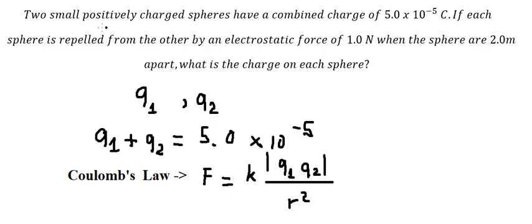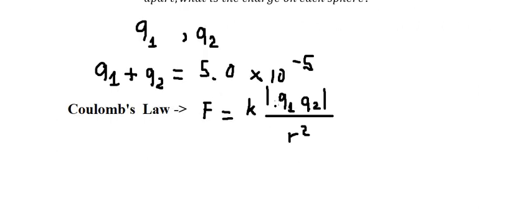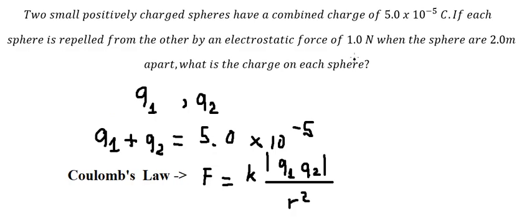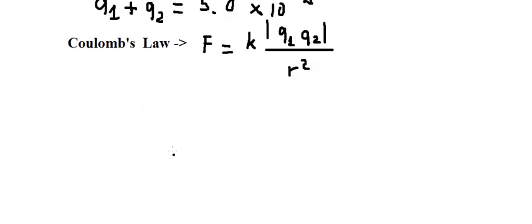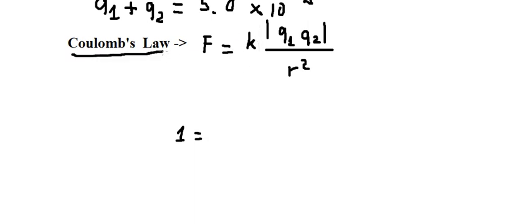Because they are both positive, we can cancel the absolute value. We know that F is equal to 1 newton, and k is the constant of Coulomb's Law.